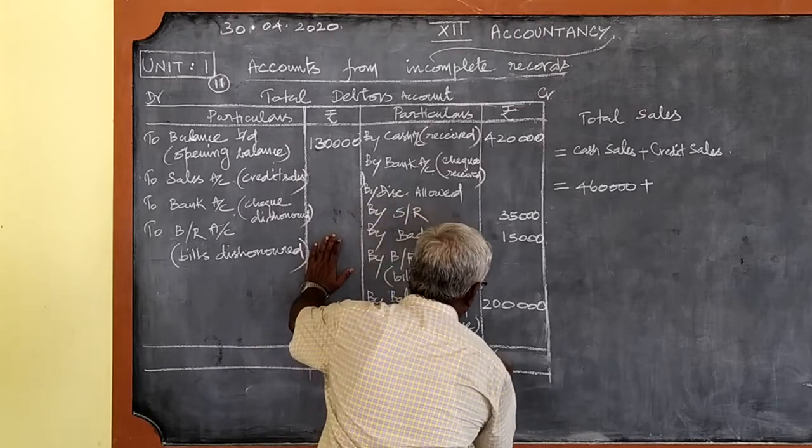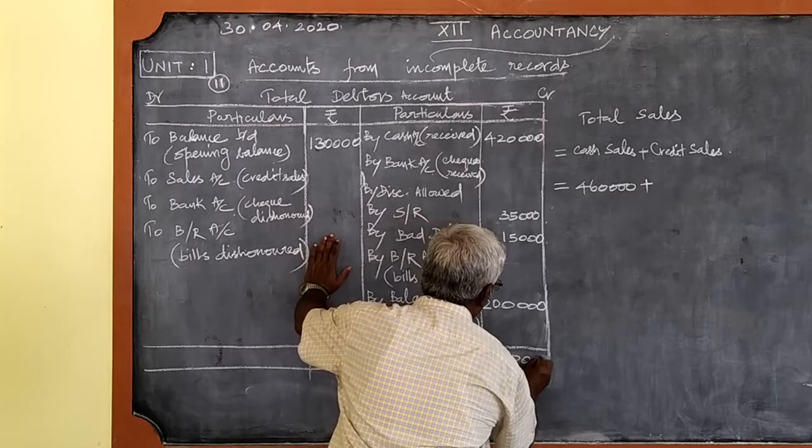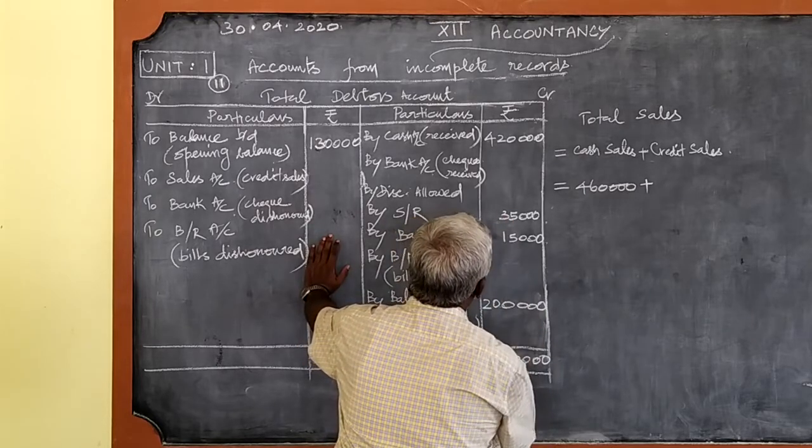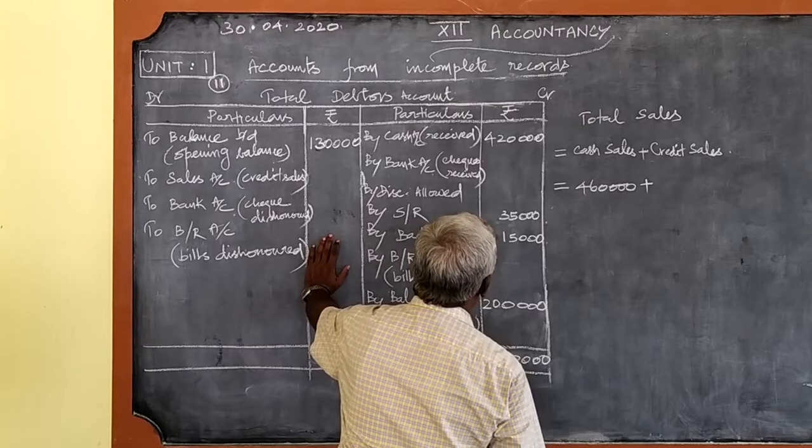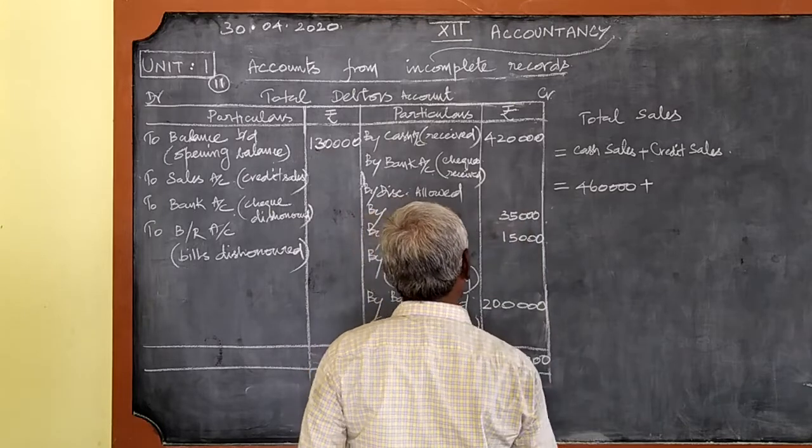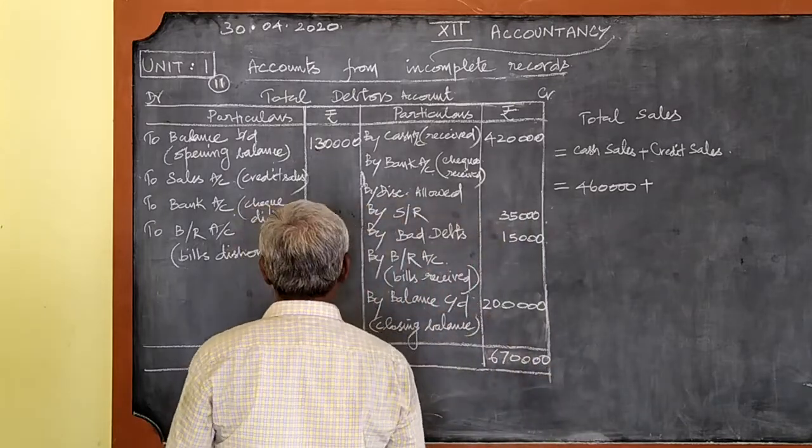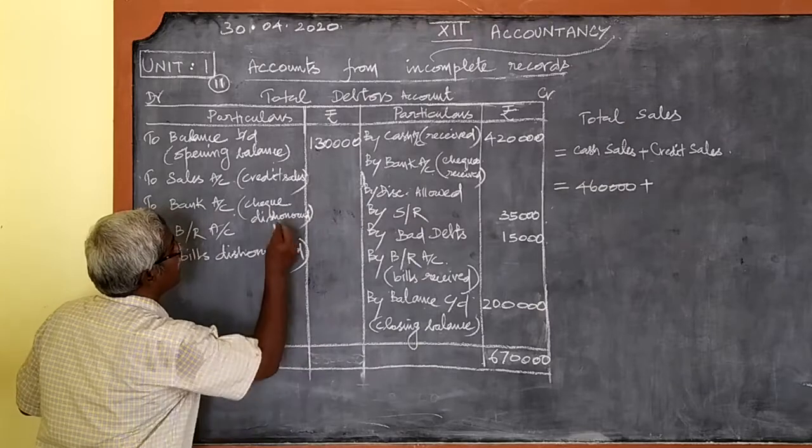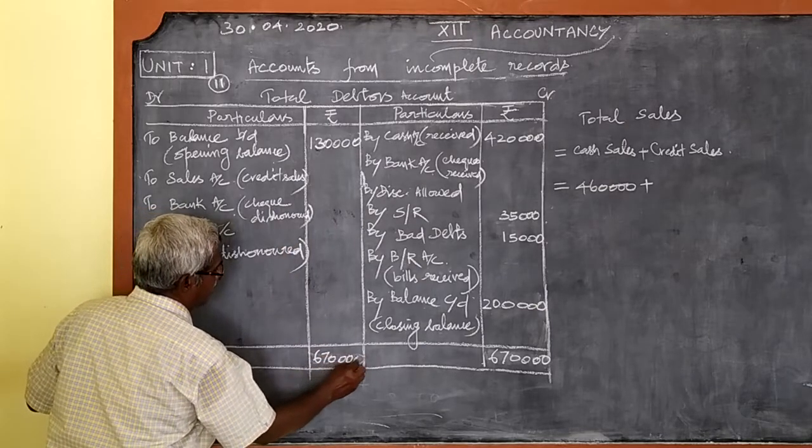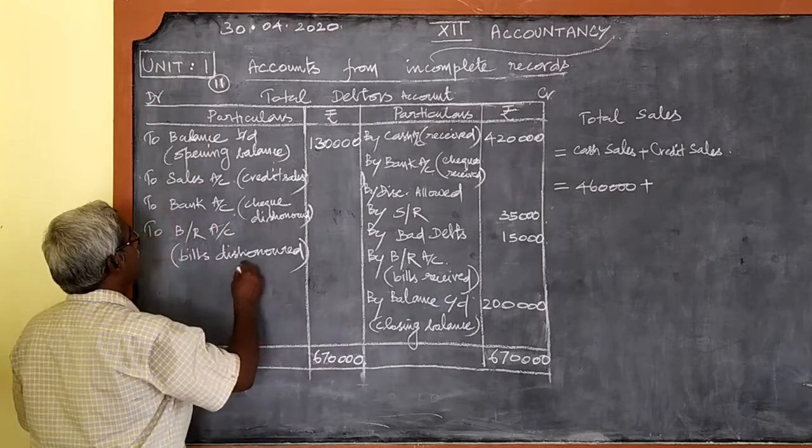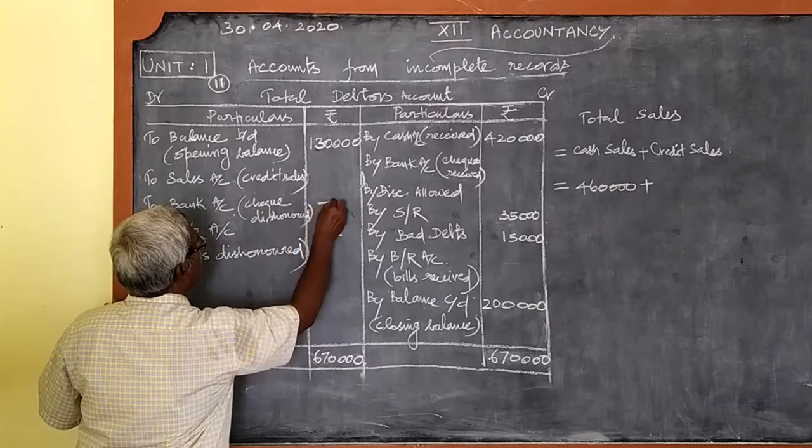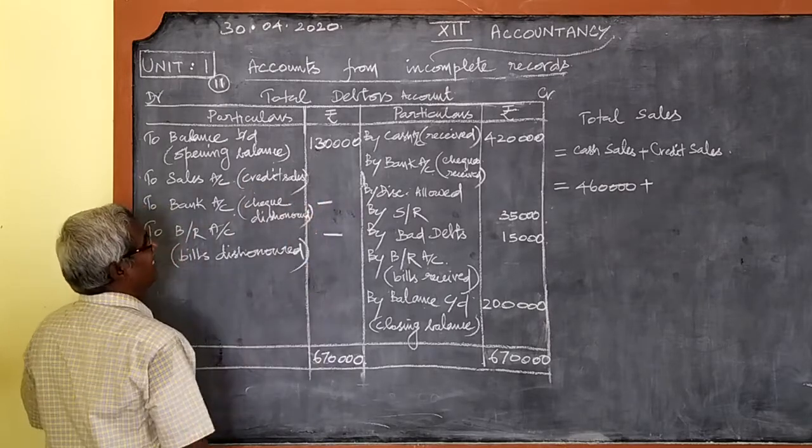6 lakhs 70,000. Here this is only 1 lakh 30,000, so you write the same 6 lakhs 70,000 as the total, and the balancing figure must be the credit sales. Other two items, no value is given, what is it here?